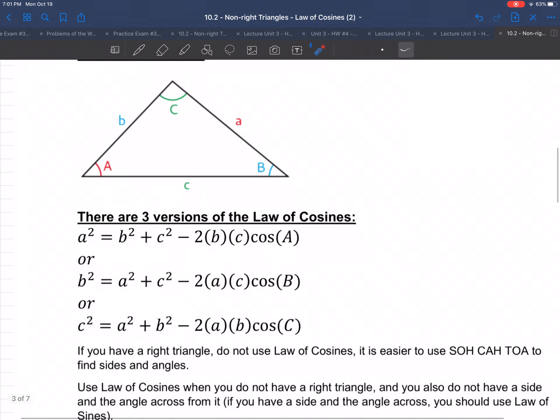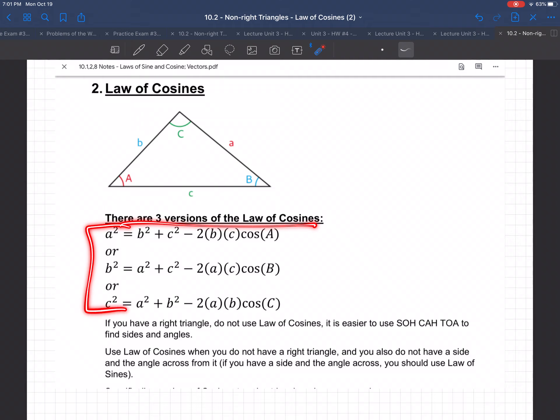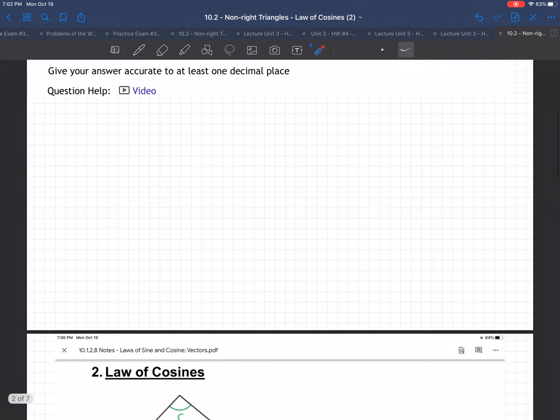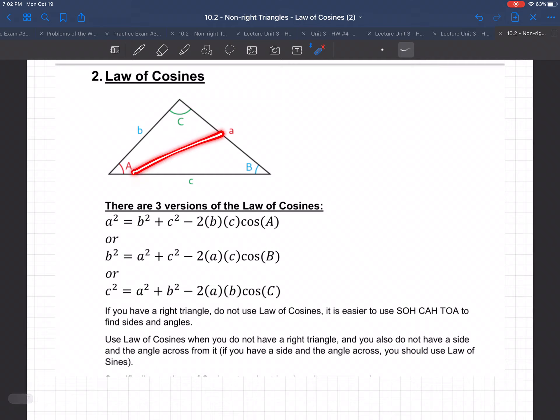So there's three versions of the law of cosines listed right here. Basically what they all say is that they all connect a side with the angle across from it. See, it's A with A, or B with B, or C with C. And then the other two sides are in the middle. So you can do it any which way you want. You can connect A with A, and then B and C will be in the middle. Or you can connect B with B, and A and C will be in the middle. Or C with C, and A and B will be in the middle. Doesn't matter.